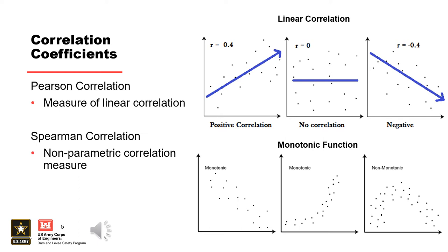A value closer to 0 means there is little to no correlation. The Spearman correlation is a non-parametric measure of rank correlation, which is the statistical dependence between the rankings of two variables. It assesses how well the relationship between two variables can be described by a monotonic function. Both of these correlation coefficients can be used to evaluate relationships between the variables in an RFA simulation.